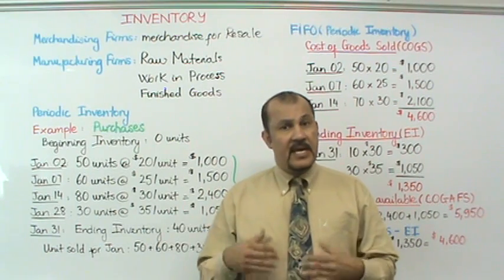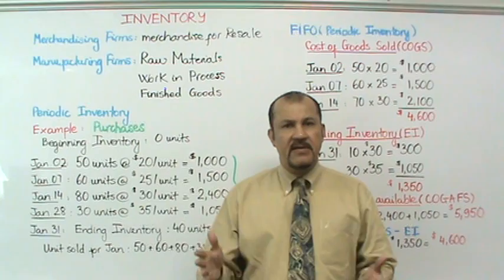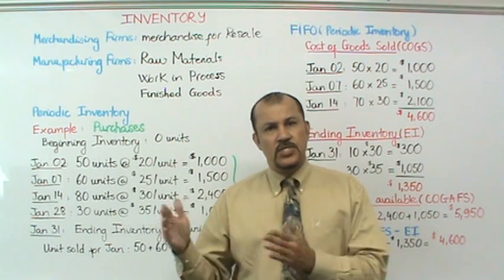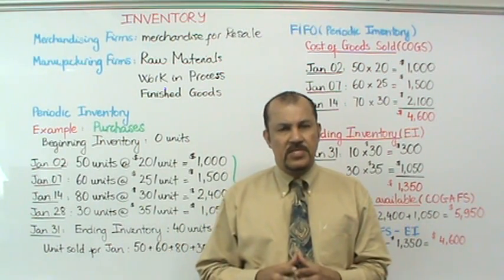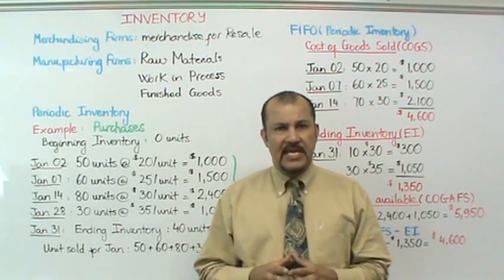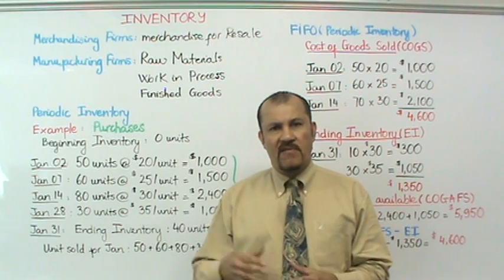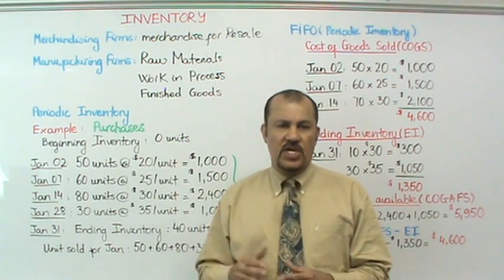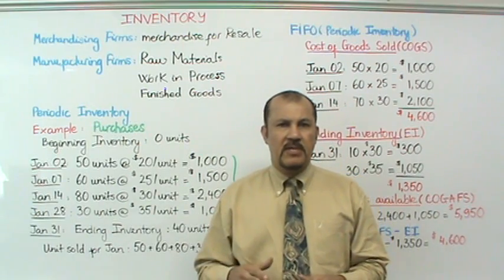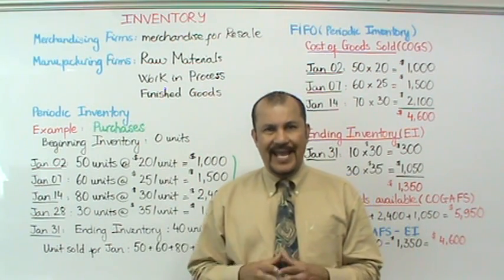Finished goods — again at the end of the month, the company has about 100 fully finished tables waiting to be sold, not yet sold to its customers. The value of these fully finished unsold tables would constitute the value of your finished goods inventory. All of these inventory accounts are assets, and specifically they are current assets.